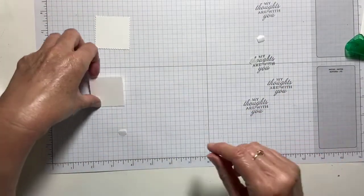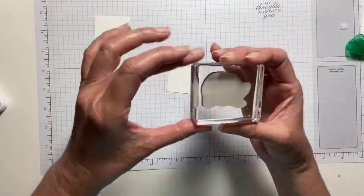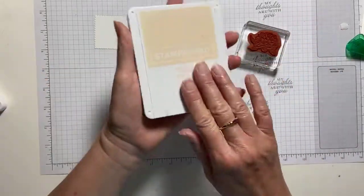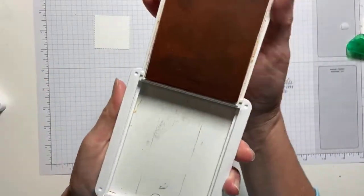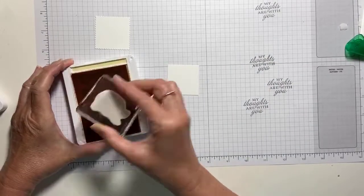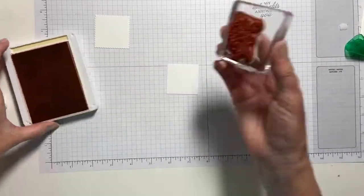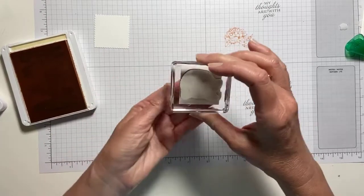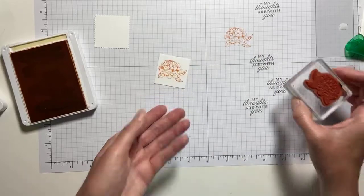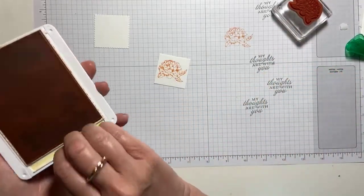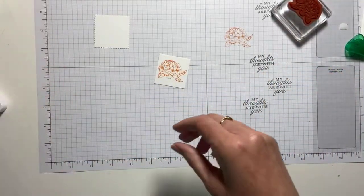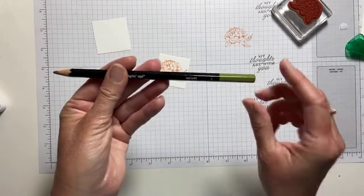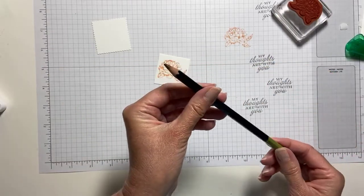Next up, I have my little peony stamp. Just a little one. And I'm going to stamp that in petal pink today. The whole thing. Right on that little square. And it fits perfectly. So I'm going to let that dry a minute.